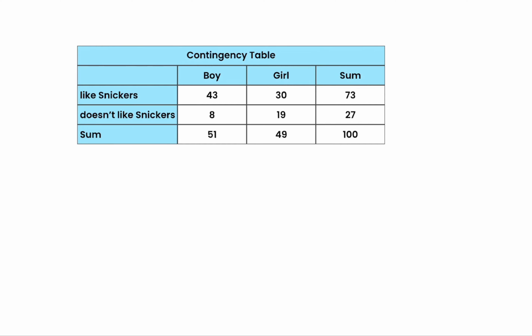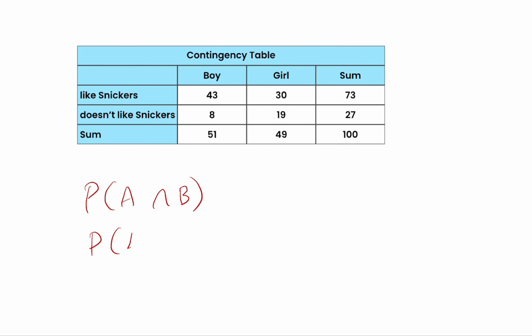In this video, we're going to talk about probability and interpreting contingency tables. Specifically, we're going to look at things like the probability of A and B, the probability of A or B, and the probability of A conditional on, or given, B.